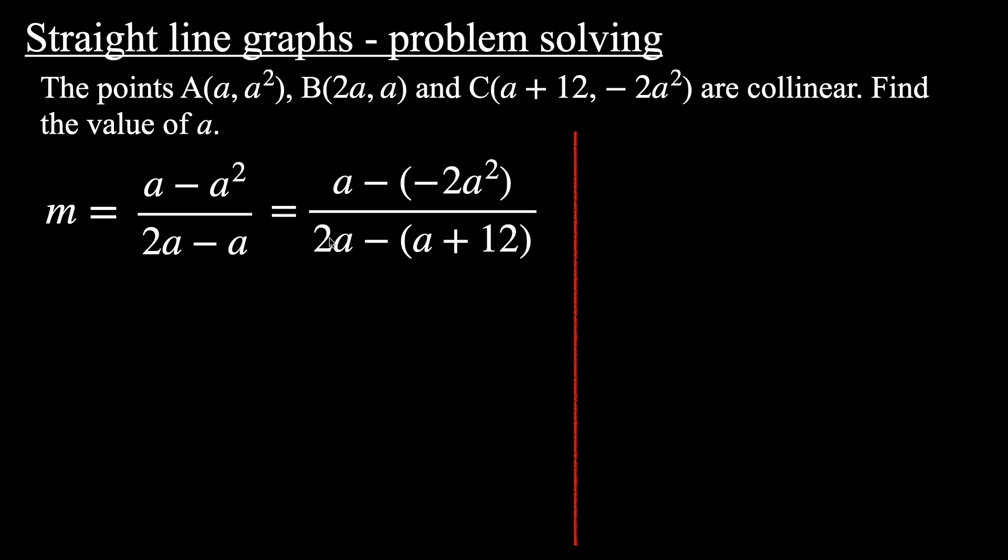So here's the equation. Let's simplify first. So on the left-hand side, we can factorize an a out from both terms. So on the left-hand side, we'll have a times (1 - a), and 2a - a is a. And over here, a - (-2a²) is a + 2a². And 2a subtract a is just a, and negative plus 12 is negative 12. So we've simplified this down a little bit. We can simplify further. We can cancel these a's on the left-hand side. So we have 1 - a, just that from the numerator left over, and I've left the right-hand side as is for now.